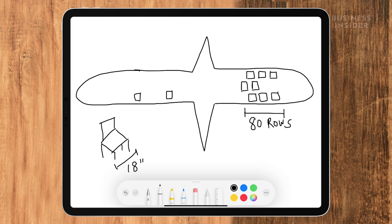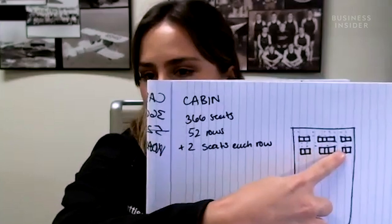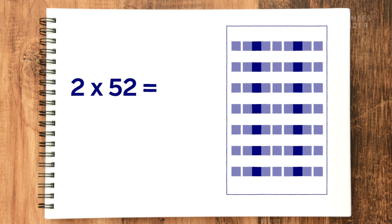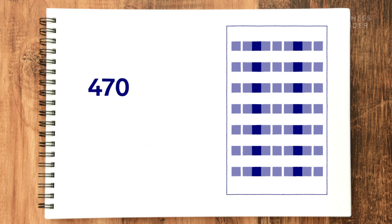If a typical chair is about 18 inches wide and a 747 has three aisles of seating with four seats in the middle and three on either end, I'm gonna add two seats per row because there's an aisle where I can hypothetically fit a seat. Adding two seats per row gives me 104 extra seats, for 470 seats on the bottom layer.